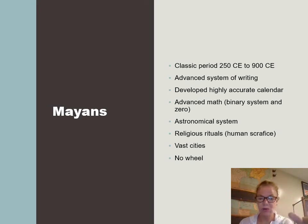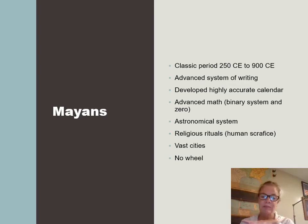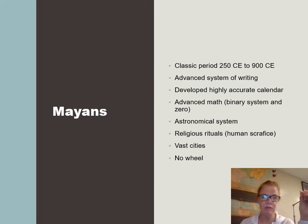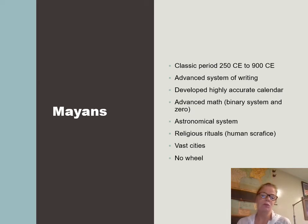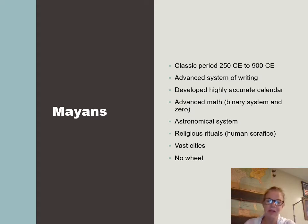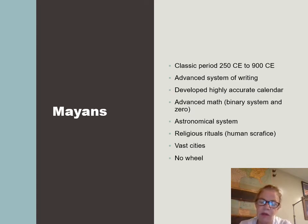They also had a really advanced math system and calendar — one of the best calendars ever kept, because we have 365 and a half days a year and they had it mapped out until 2012, which is why everyone thought the world was going to end in 2012. They even made a movie about it. They also had an astronomical system — they knew about all the celestial bodies, observed them, and had observatories, which is how they kept their calendar so accurate.